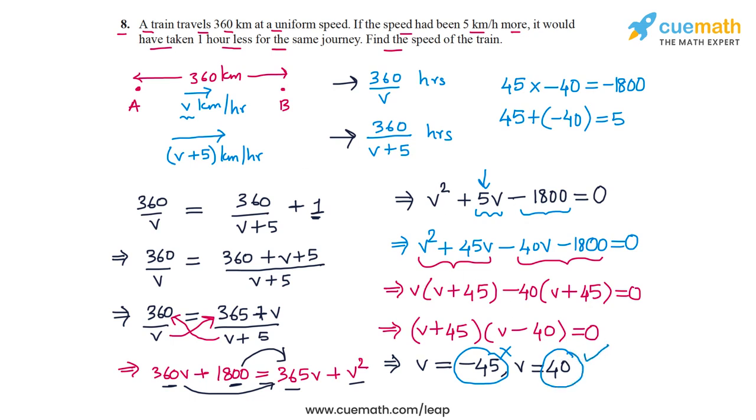So the speed of the train is 40 kilometers per hour. Let us verify whether this is correct. At 40 kilometers per hour, the train will cover a distance of 360 kilometers in 360 by 40, or 9 hours. If the speed is increased by 5 kilometers per hour, so the speed becomes 45 kilometers per hour, which is v plus 5.